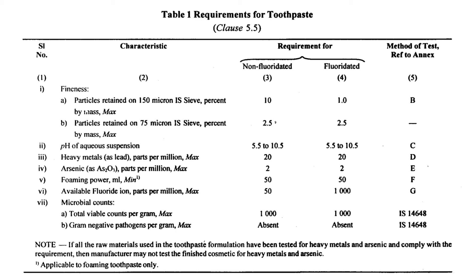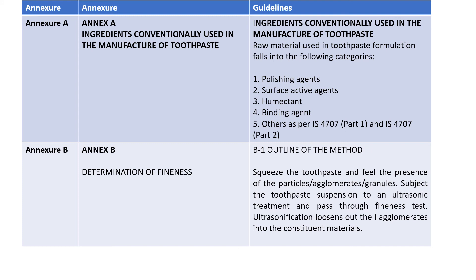Another specification is the total microbial count. The total viable count per gram maximum limit is 1000 as per Indian Standard 146. For gram negative pathogens per gram, the maximum limit is that they should not be present at all — complete absence is required. In the case of skin cream a certain level was permitted, but for oral products like toothpaste it is not acceptable at all, since skin creams work on the epidermis area whereas toothpaste is an oral product.